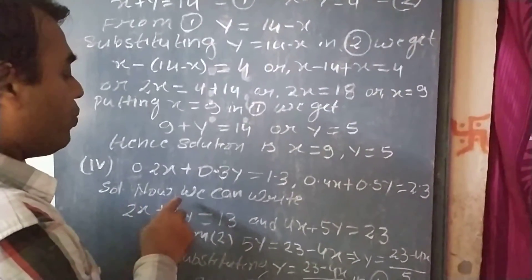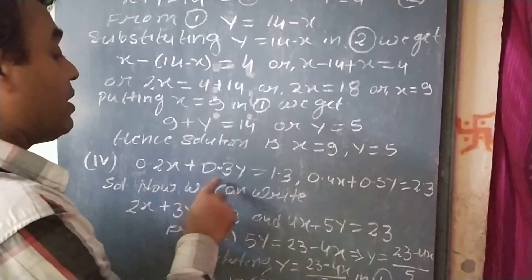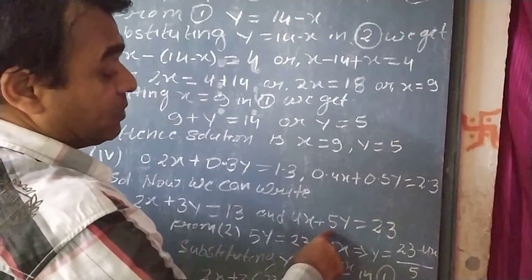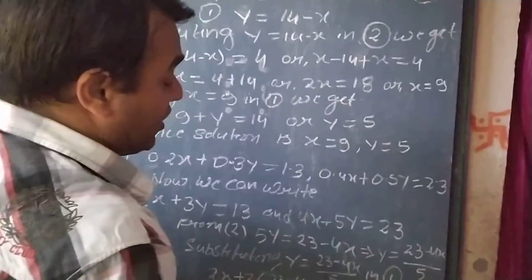Solution: now, we can write 2x plus 3y equal to 13, that is, we can multiply it by 10. Similarly, 4x plus 5y equal to 23, we have also multiplied this equation by 10.